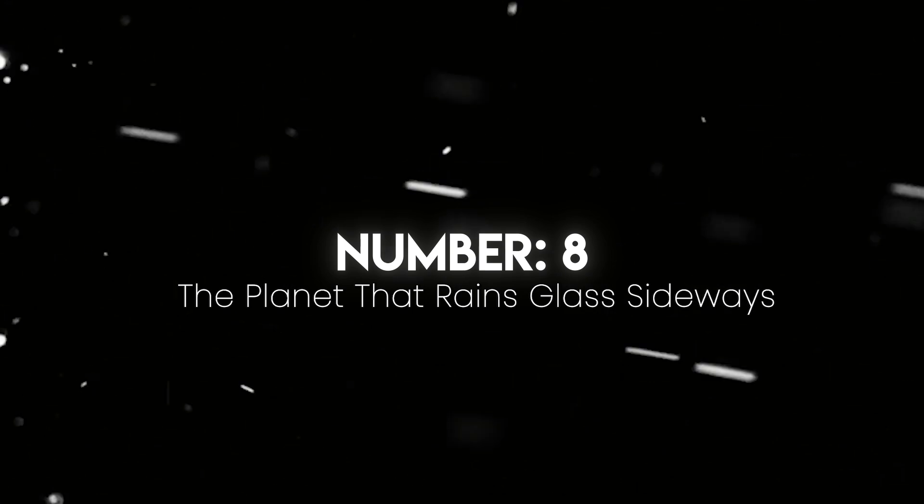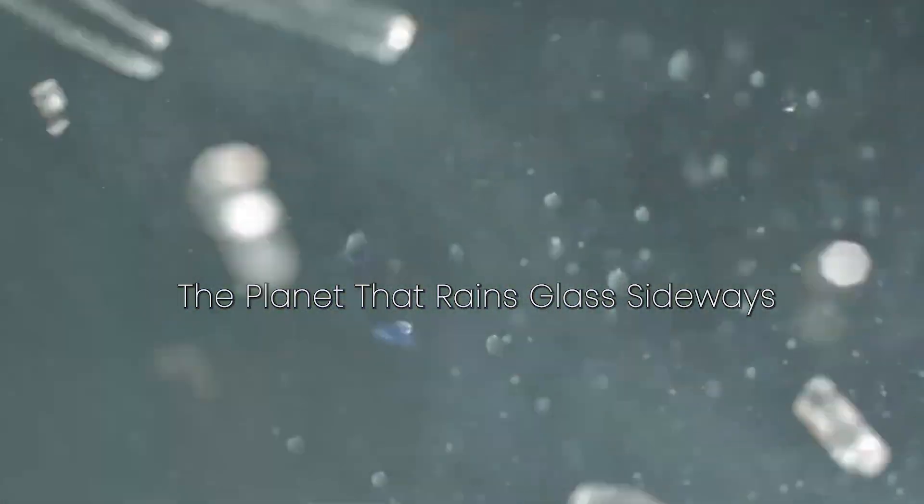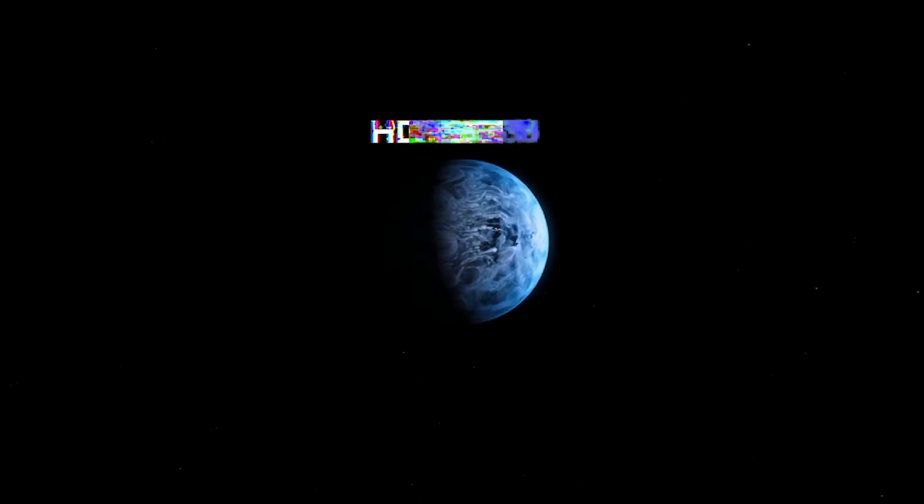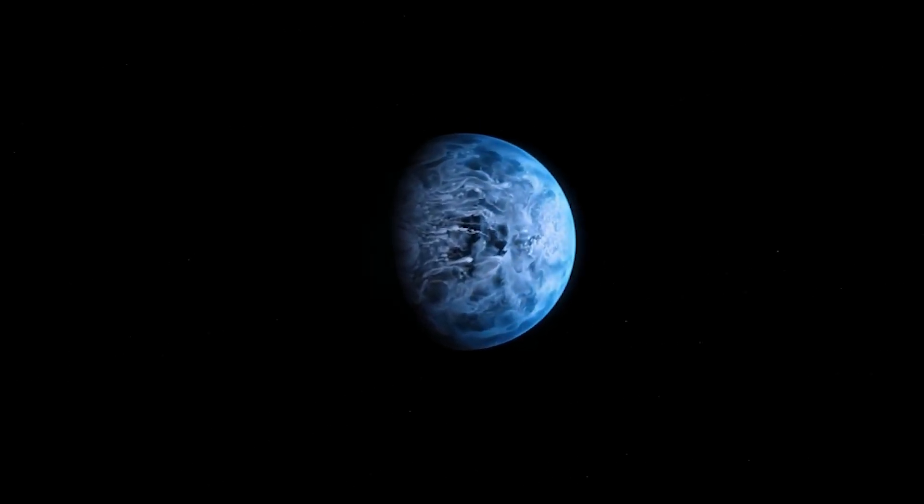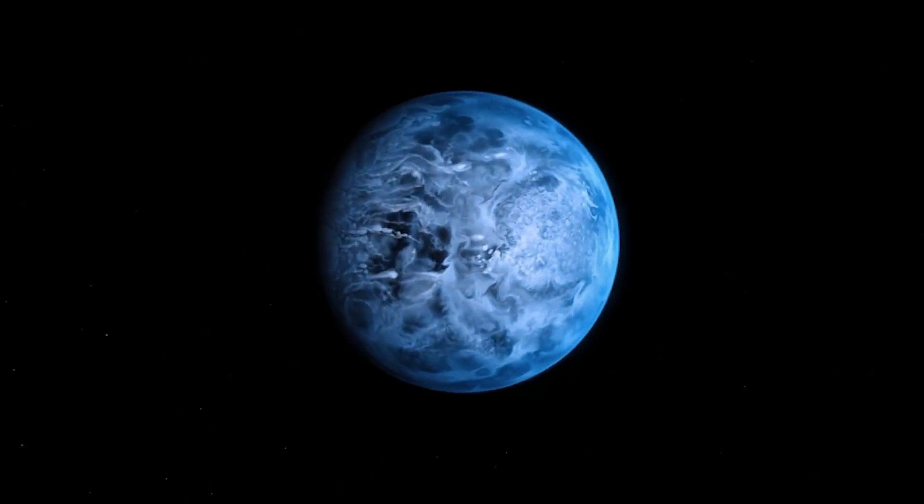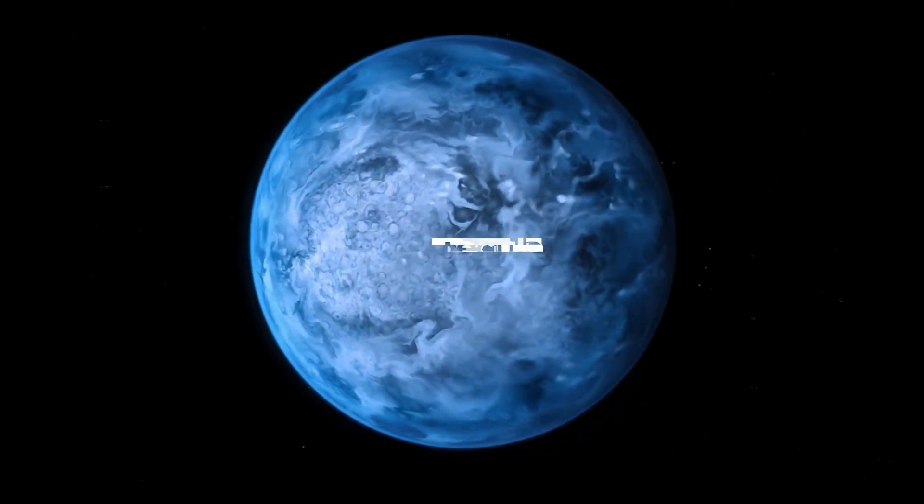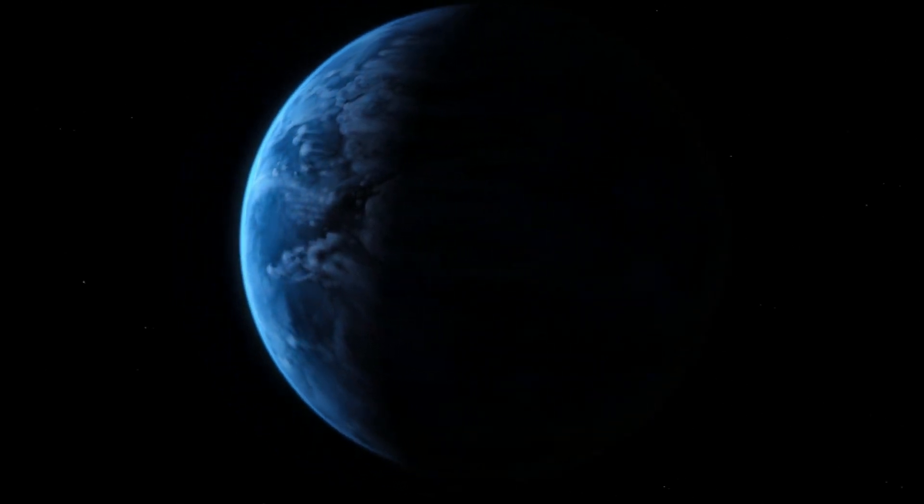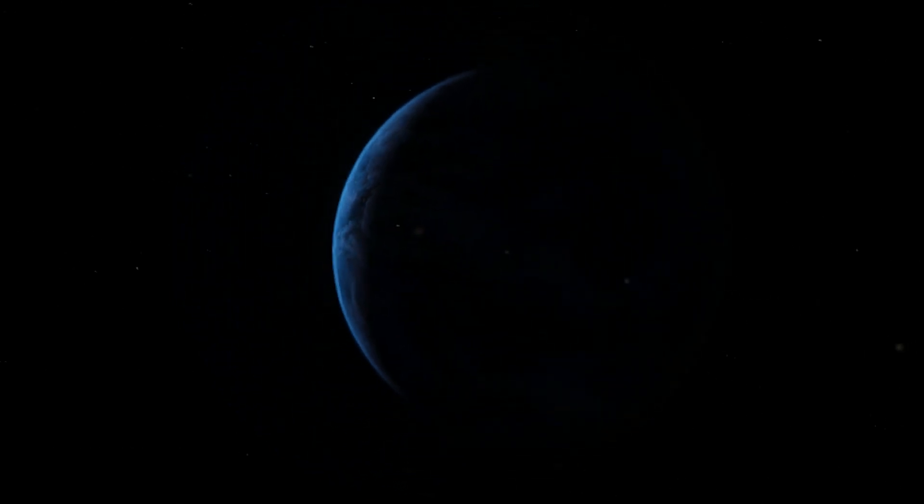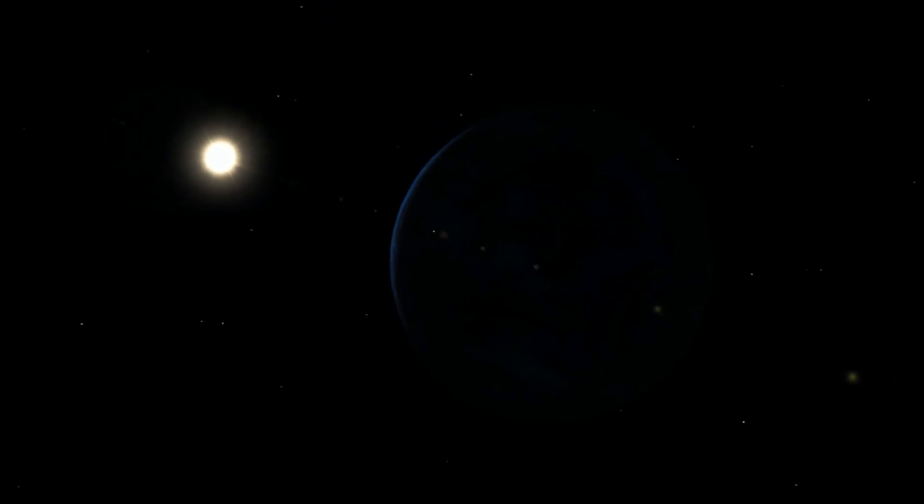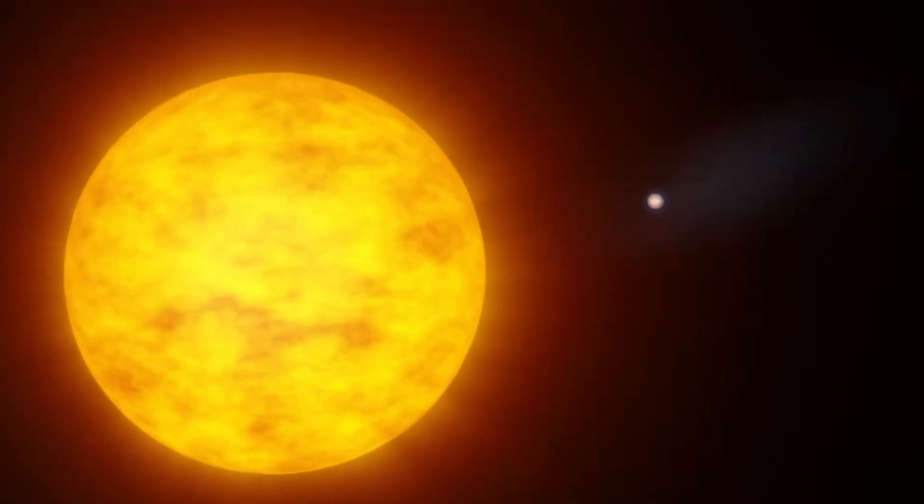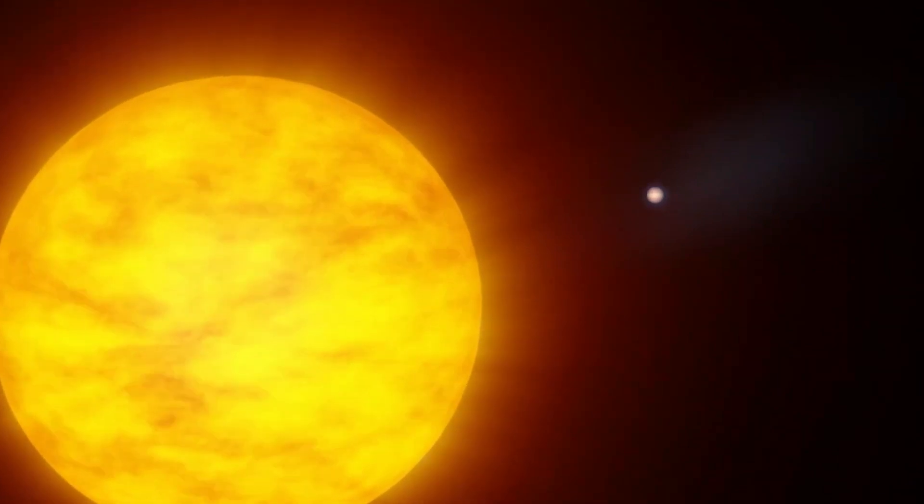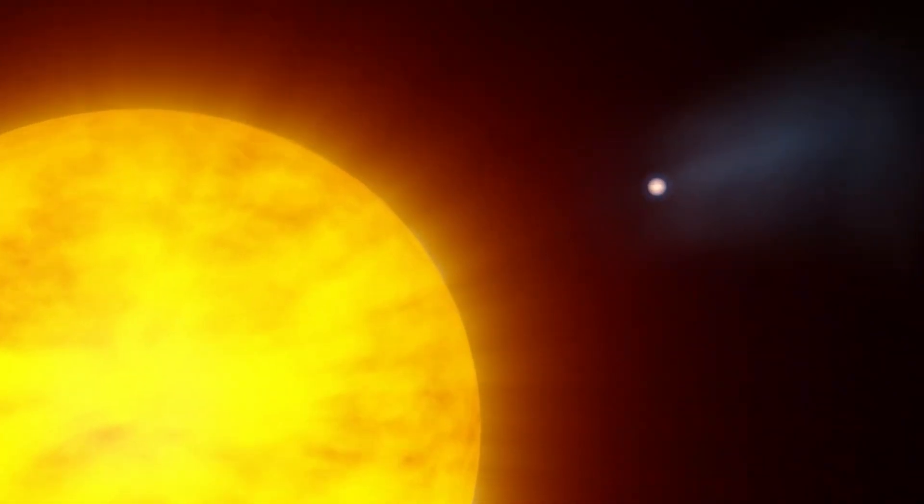Number 8: The planet that rains glass sideways. HD 189733b isn't just another distant exoplanet. It's a nightmare world straight out of science fiction. From far away, its stunning deep blue color makes it look like Earth, but that's where the resemblance ends. Winds scream at 5,400 miles per hour, 8,700 kilometers per hour, seven times faster than Earth's strongest hurricanes. Temperatures soar to 1,700 degrees Fahrenheit, 930 degrees Celsius, hot enough to melt lead.